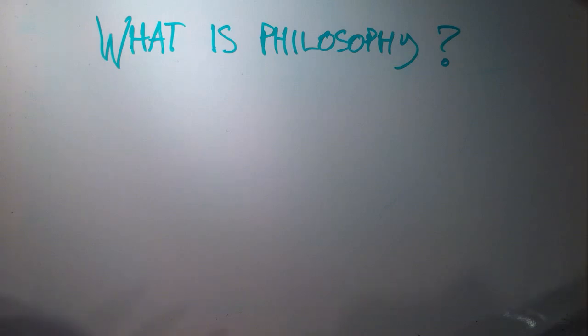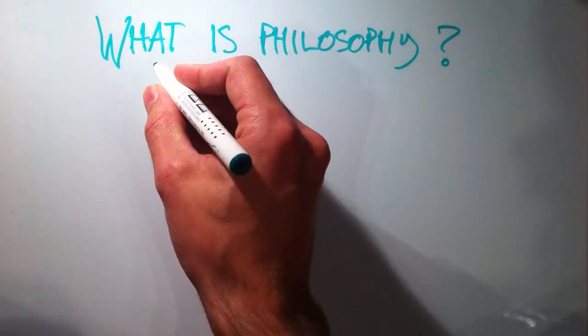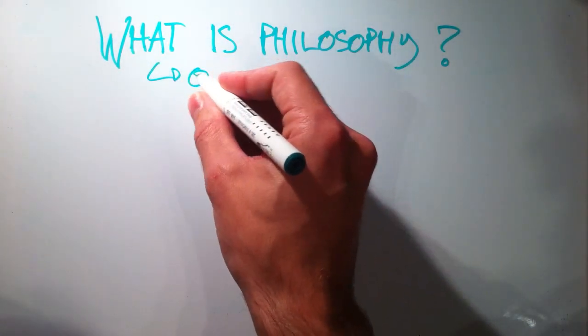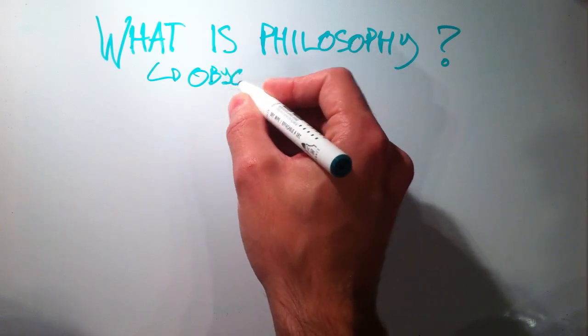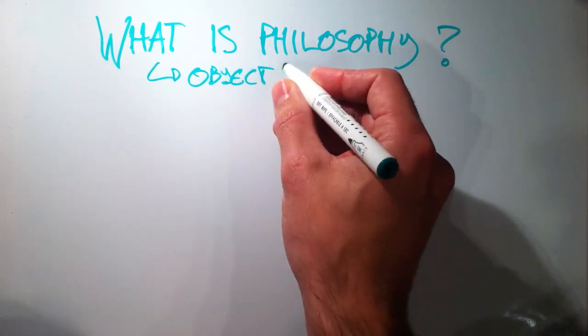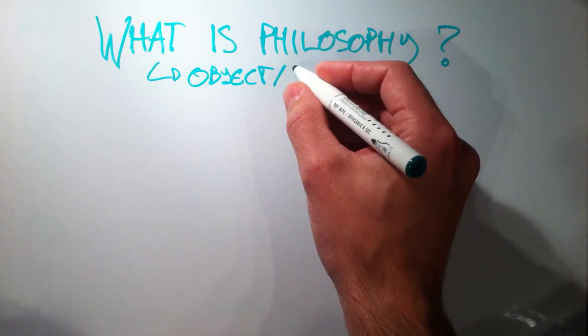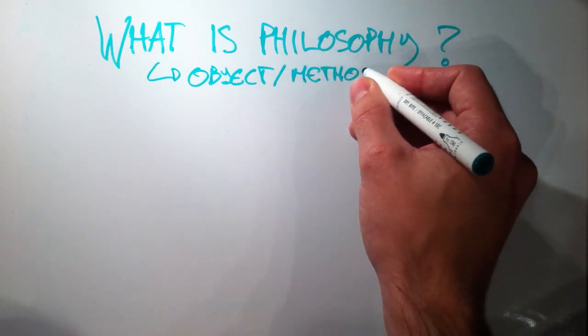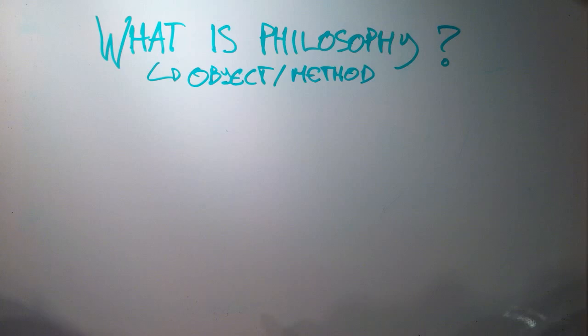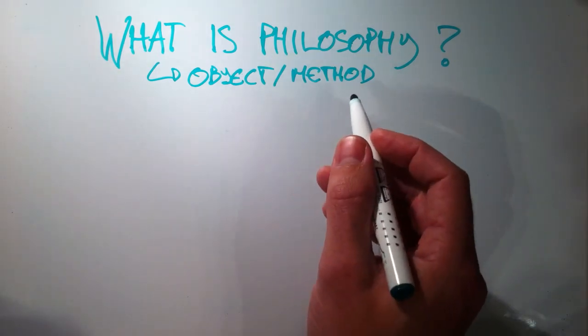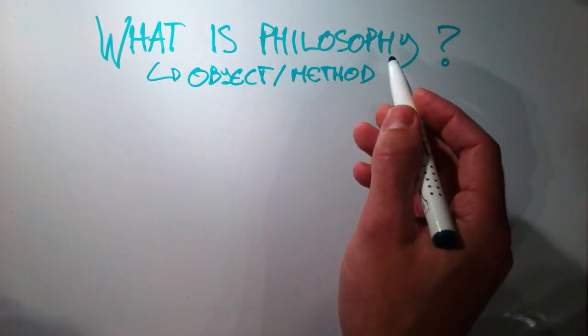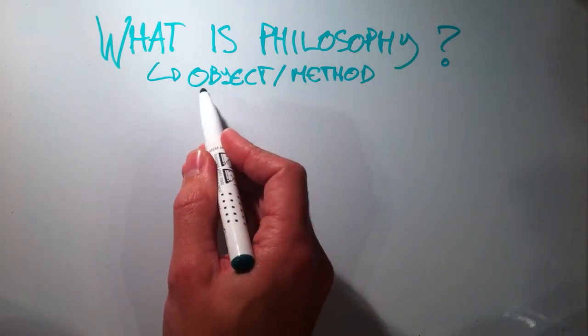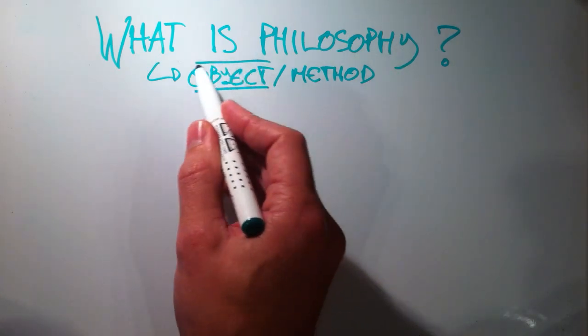Now you can define what an academic discipline is either by pointing towards its specific object—what the discipline is about—or by showing what its specific method is—how you do research, how you conduct research in this discipline. This means how do you do philosophy, how do you philosophize? But we'll focus on the object first and talk about the method later on.